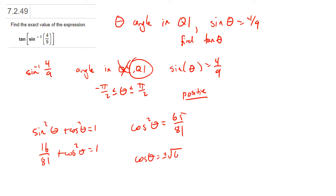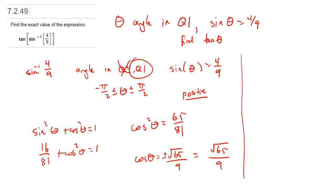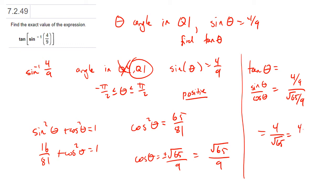So cosine squared theta equals 65 over 81, which means the cosine of theta is plus or minus root 65 over 9. Now how do I know whether it's plus or minus? We are in quadrant 1, and in quadrant 1 the cosine is positive. So we're going to take the positive one: the cosine of theta must be root 65 over 9. Therefore the tangent of theta is the sine of theta over the cosine of theta. The sine of theta was 4 ninths and the cosine of theta is root 65 over 9. The division by 9 cancels out and this is just 4 over root 65, or equivalently 4 root 65 over 65.